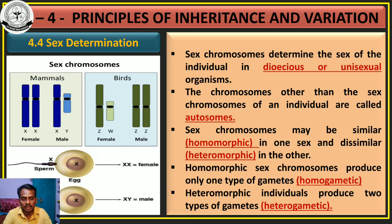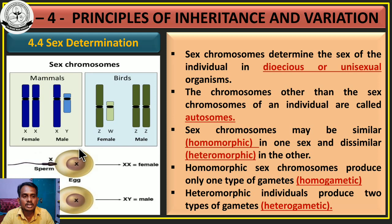Somatic chromosomes are autosomes. Other than the autosomes, the chromosomes that are responsible for the determination of the sex of an individual are called allosomes, or sex chromosomes. Let's move on to the topic.